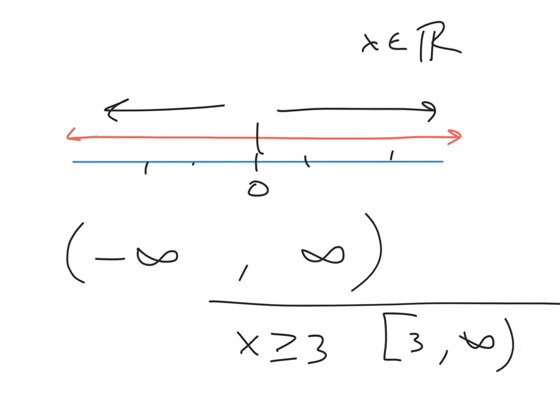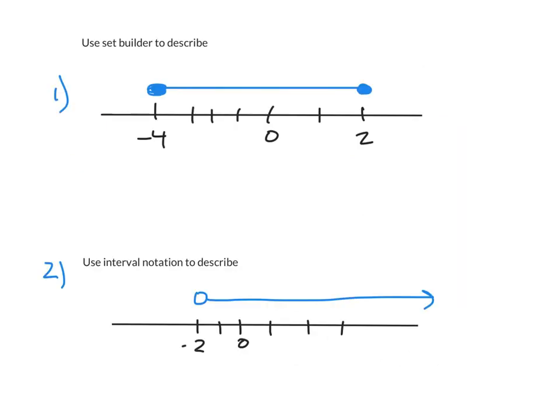So in this short time we've already discussed the two methods that you'll be using to discuss domain and range. We have set builder and we have interval notation. As is customary since we've gone over this together, I'm going to give you two examples to try on your own. So here you have two problems, one of each, using set builder. Remember to use your braces and your inequalities, and also using interval notation.